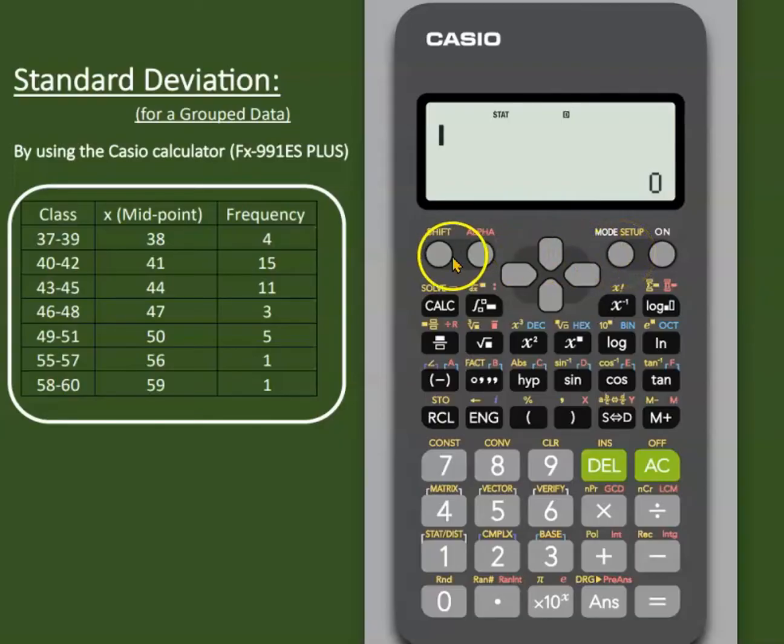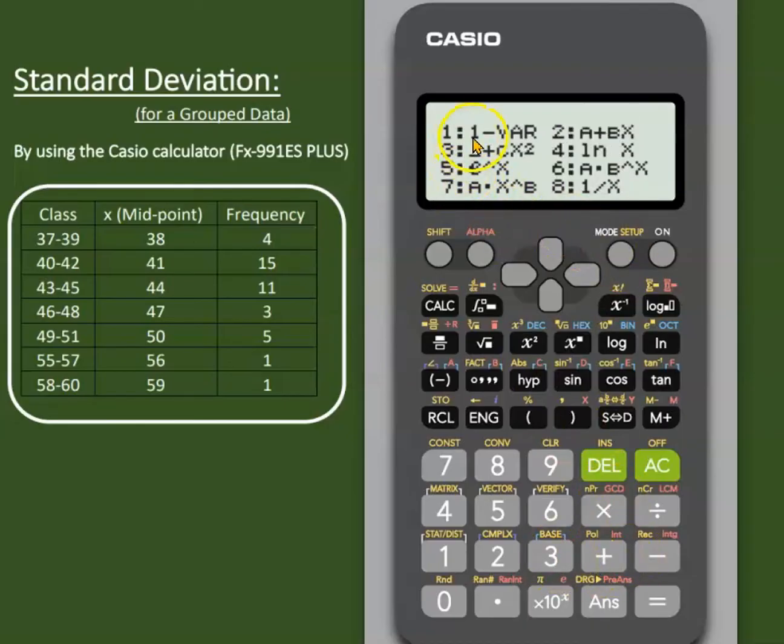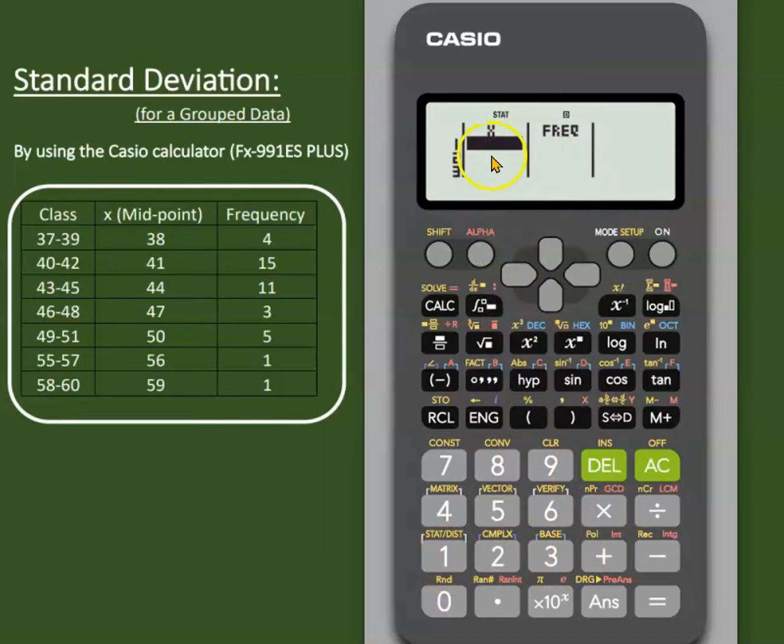Now we'll add the table values to the calculator. So again, go to mode, and in the mode, the first option is one variable. You see two columns appearing for the number of classes. The X column represents midpoints and the other column is for frequency.